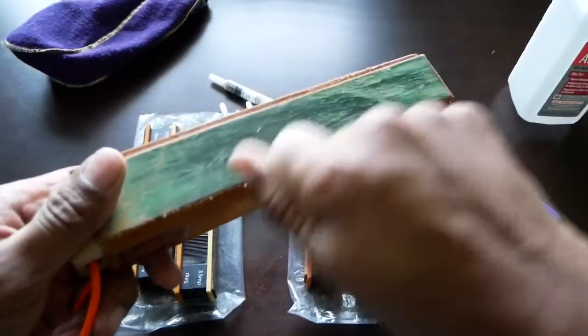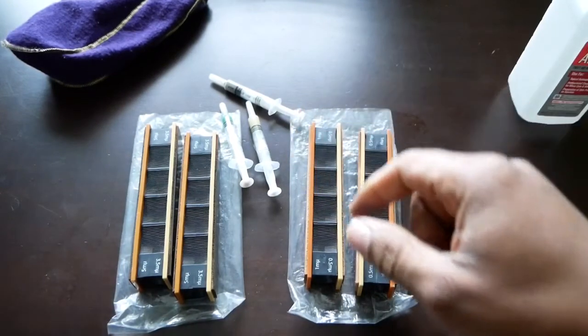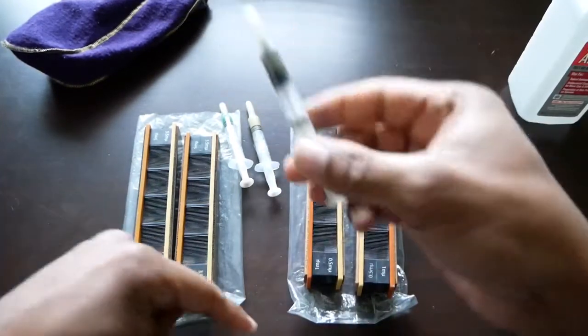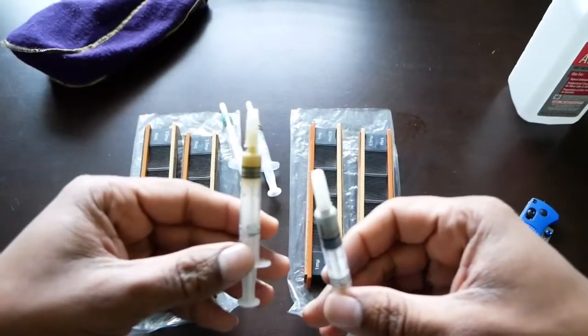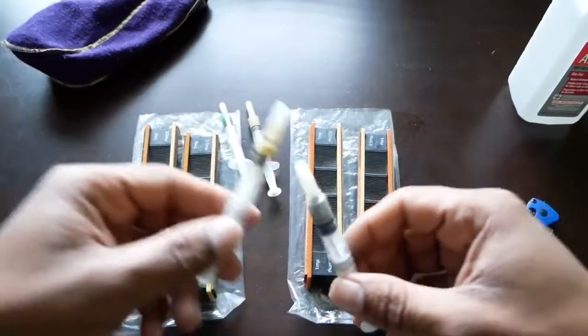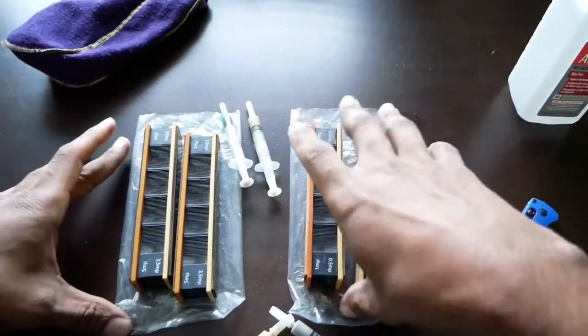This is easier because this is a paste and you can just squirt a little bit out, as I'll show you in a second. I rub them together. Some people use their finger. I'll show you how I do it. I'm going to start with the five micron side.